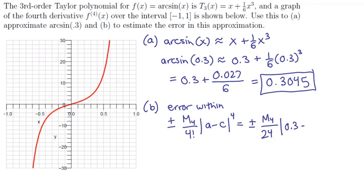times a, which is 0.3, minus c, which is the center of the series, and evidently that's 0, to the fourth power. And so if we clean that up, that's ±(M4/24)(0.3)⁴.